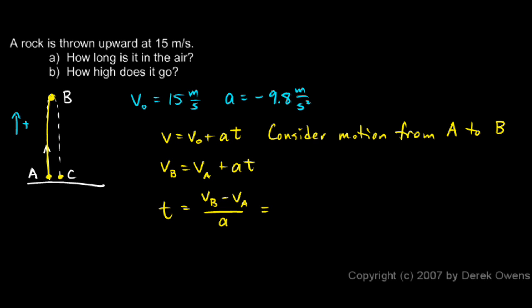So it looks like this: VB, okay VB, the velocity at B is zero, minus the velocity at A. The velocity at A is the initial velocity, 15 meters per second. So we have a negative number in our numerator.